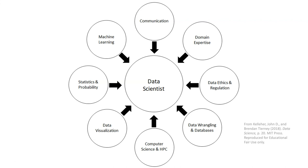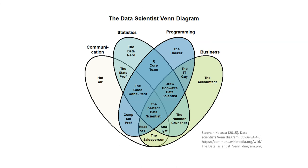Another knowledge area they call out is data ethics and regulation. Chapter 6 of their book, Privacy and Ethics, considers the problem of how best to balance the freedoms and privacy of individuals and minorities against the security and interests of society. I'm partial to this witty concept map called the data scientist Venn diagram. To get the most out of Stephen Colasa's diagram, you need to be familiar with R and with commentator Drew Conway. Where would you position yourself in this map? Do you agree with Colasa that the perfect data scientist combines high-level competencies in statistical analysis, programming, business, and communication? And where do ethics come in?